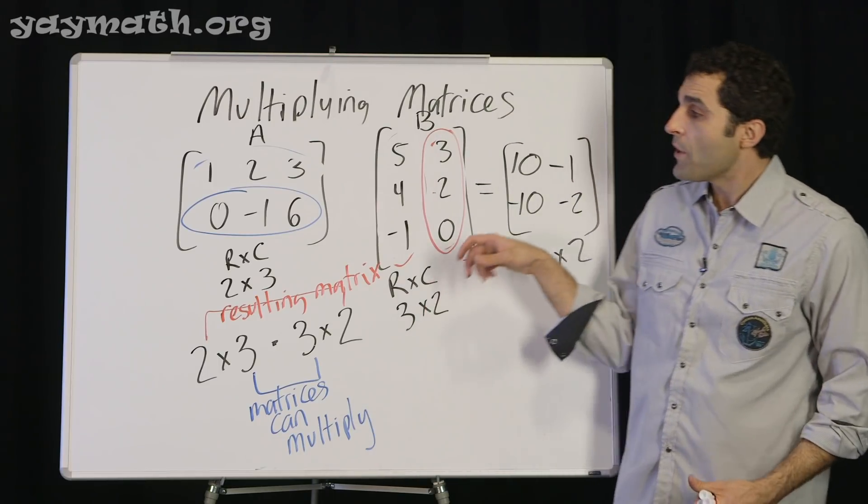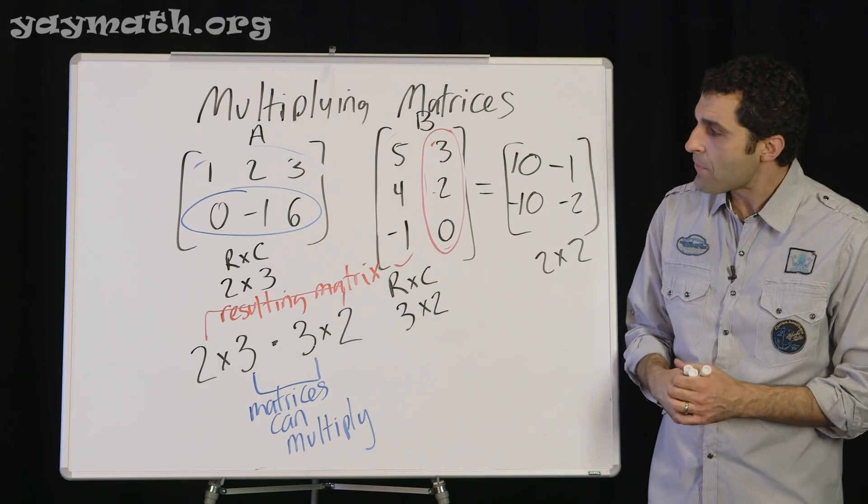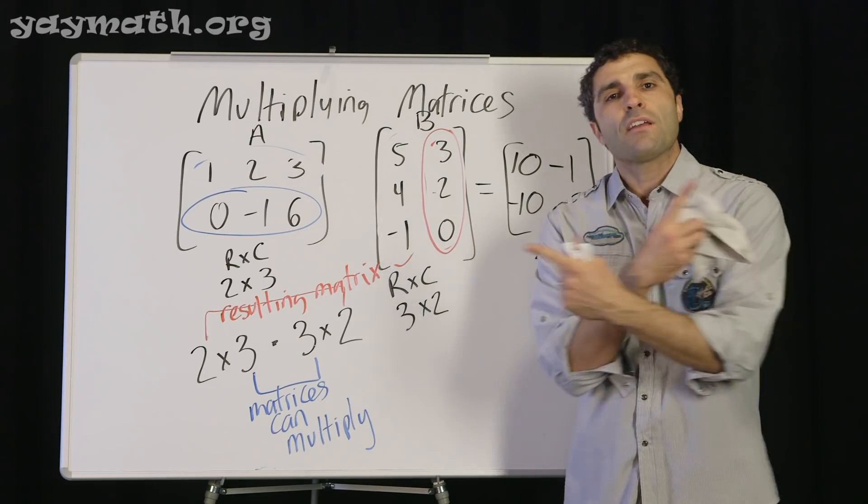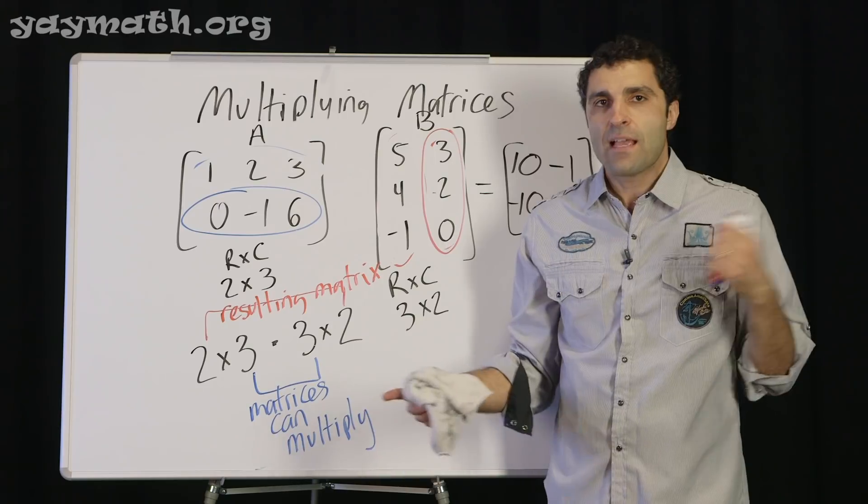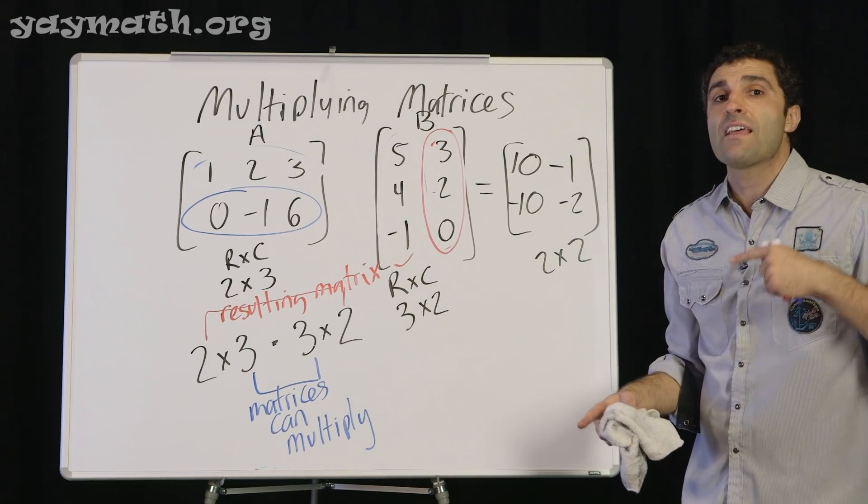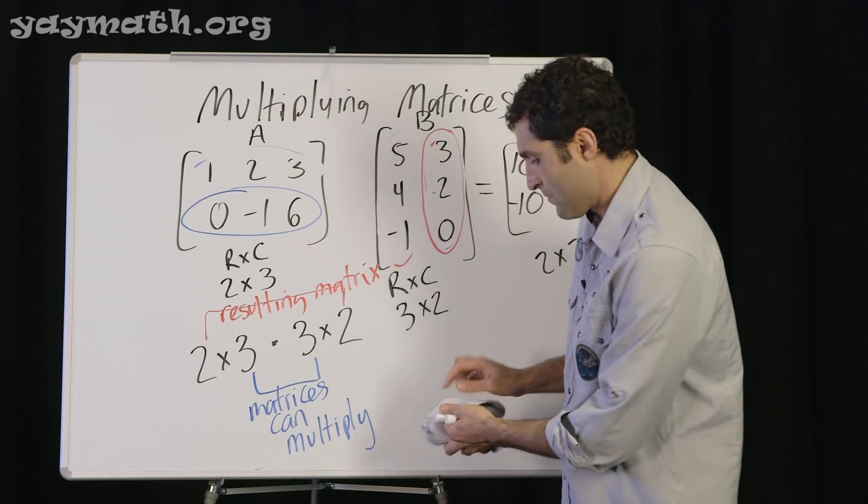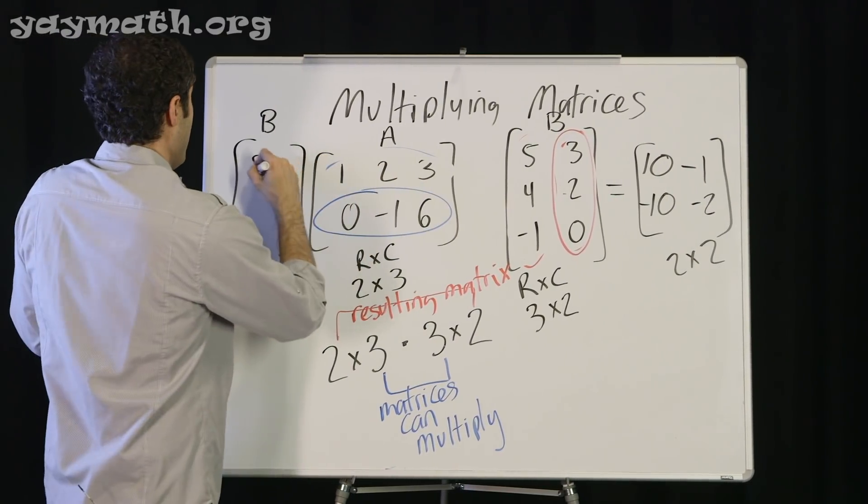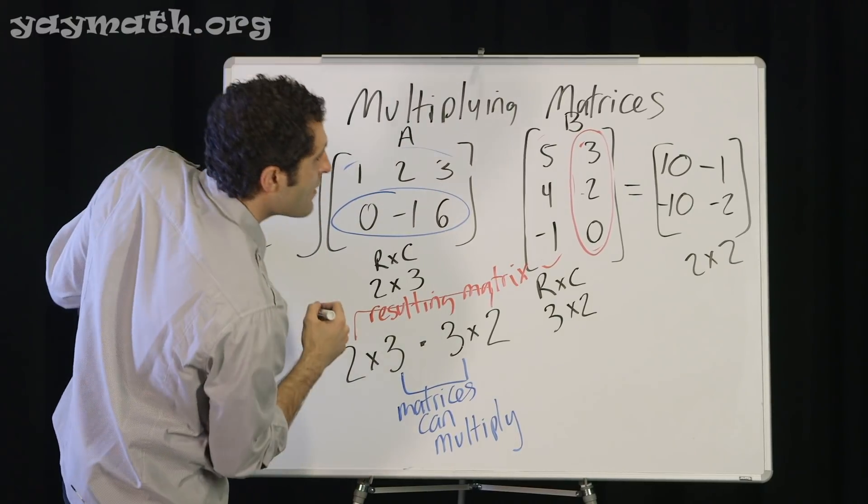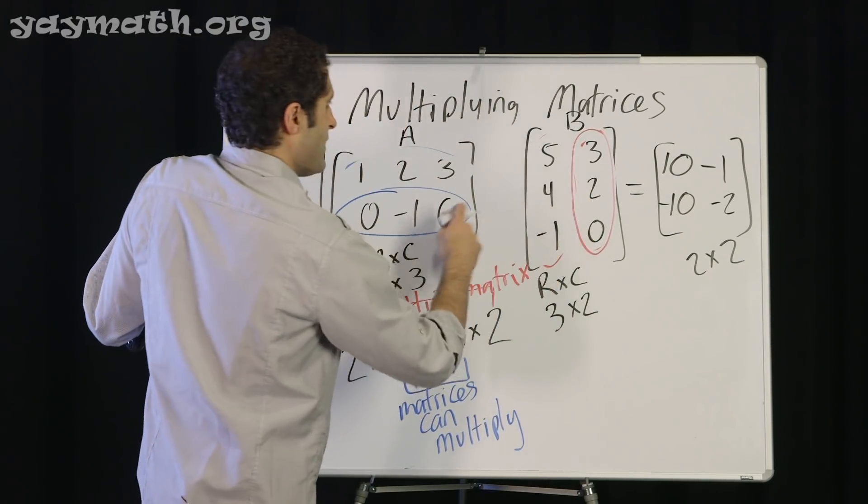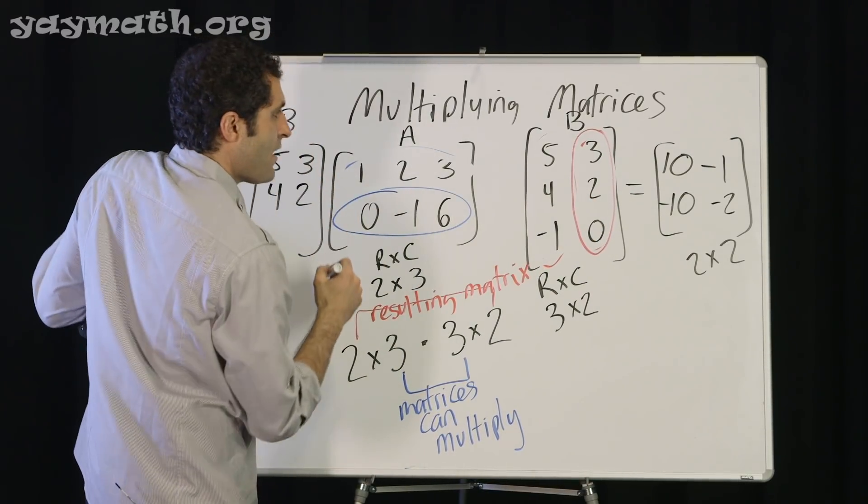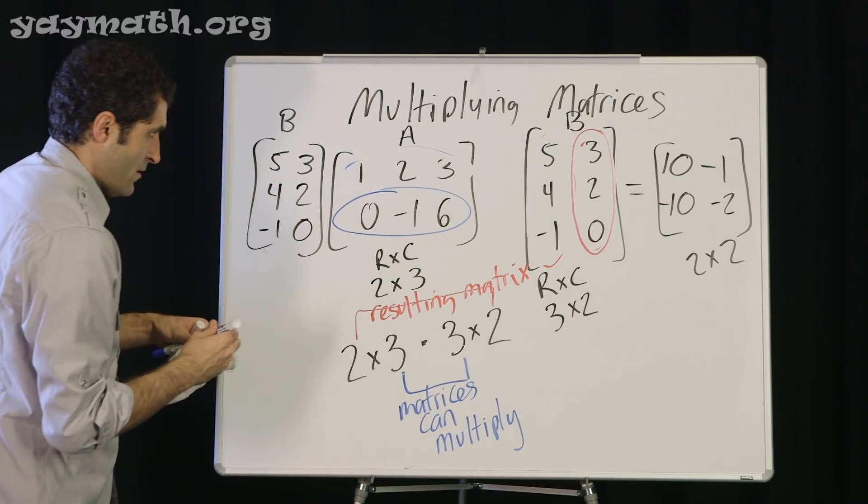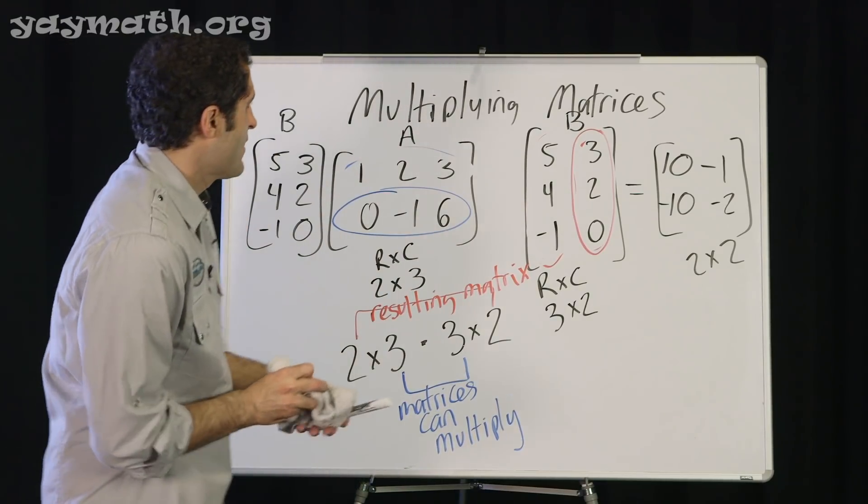What if though, we wanted to multiply B times A? Would that be the same thing? It's an interesting question, because in life we've learned that it doesn't matter the order in which you multiply stuff. 5 times 8 is the same as 8 times 5. But with regards to matrices, you'll see that that's actually not the case. Let's print this over here.